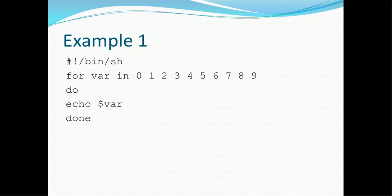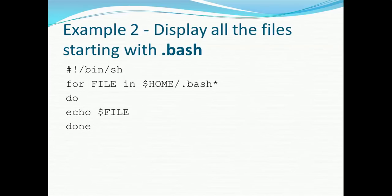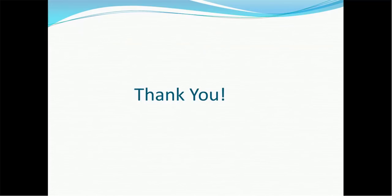For example, we are looping values from zero to nine using for, then a variable name, then in with the values, then do, then echo the variable to print the value at a time, and then done. Using the same for loop we can also print all files within the system. For example, to print all files starting with .bash followed by anything, we use: for file in $HOME/.bash*, then do echo $file, then done.